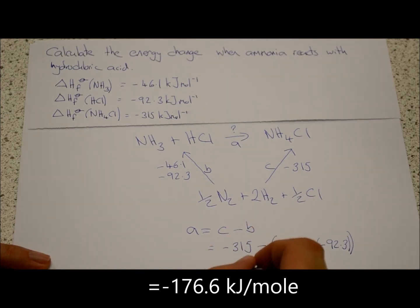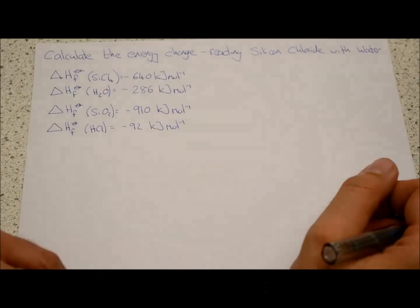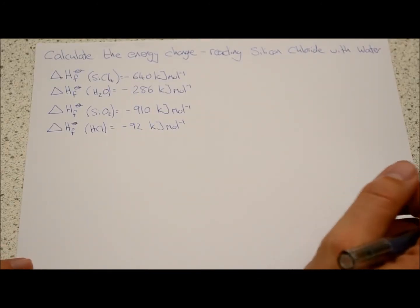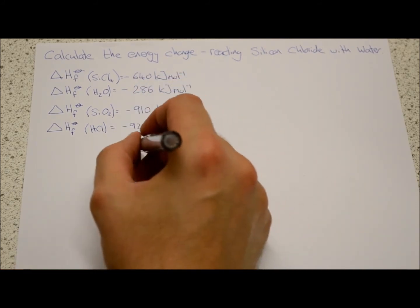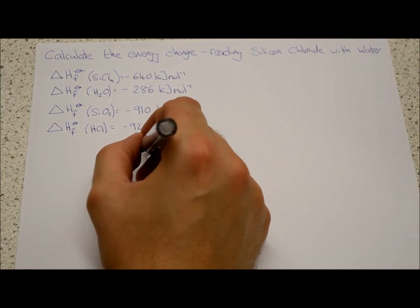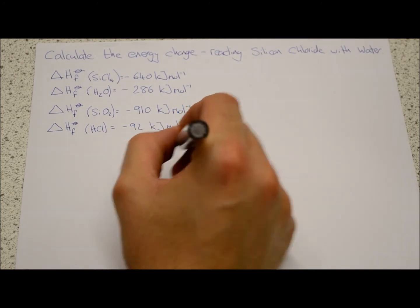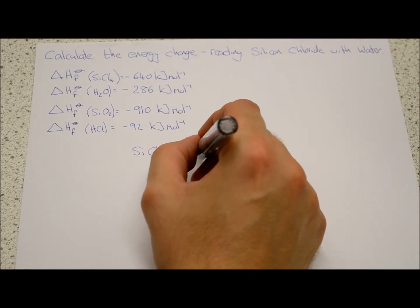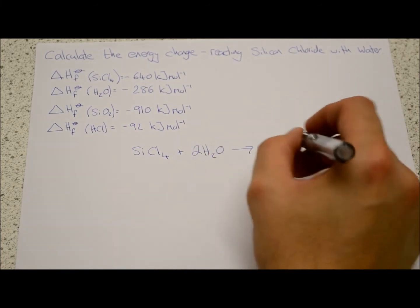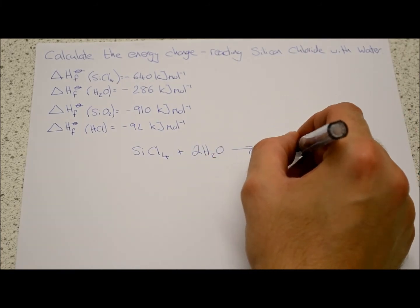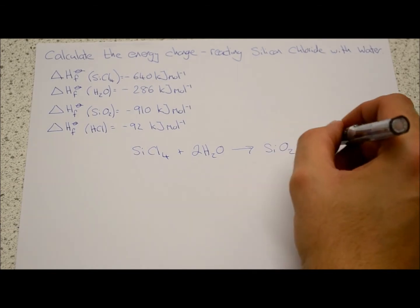Okay, we now have another Hess's law question, slightly more challenging, but we'll work through it. It's got a little bit more information. So here we're going to have silicon chloride reacting with water, and that will make silicon dioxide and four moles of hydrochloric acid.